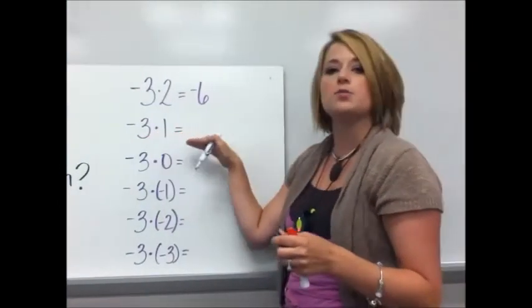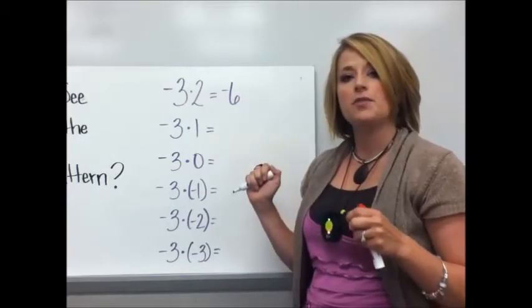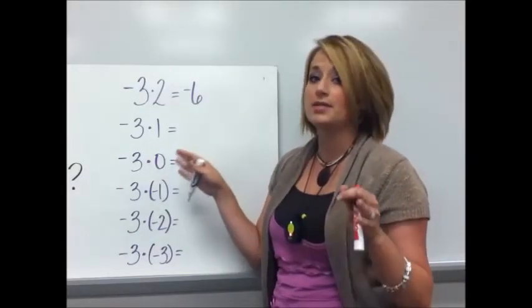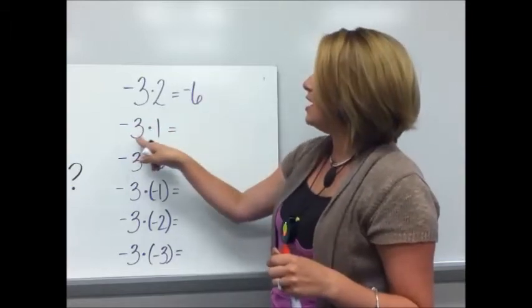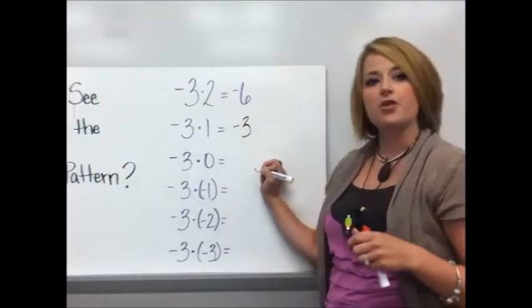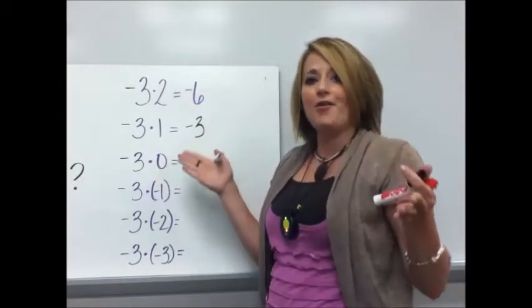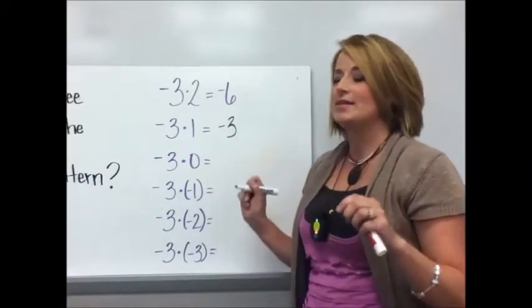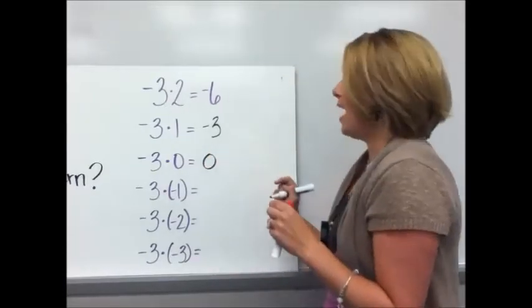Negative three times one. Well even if you don't know much about integers you know the identity property of multiplication says that if you multiply anything times one positive or negative anything times one you're going to get that number. So negative three times one is negative three. Okay well what about negative three times zero? I don't have to know about integers for that either because I know this one's easy. Anything times zero is zero.